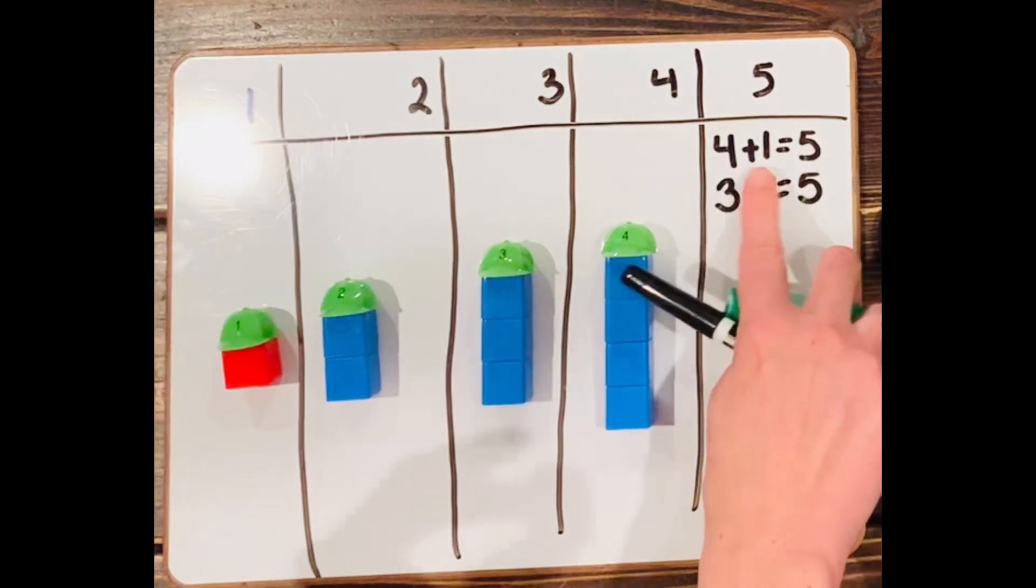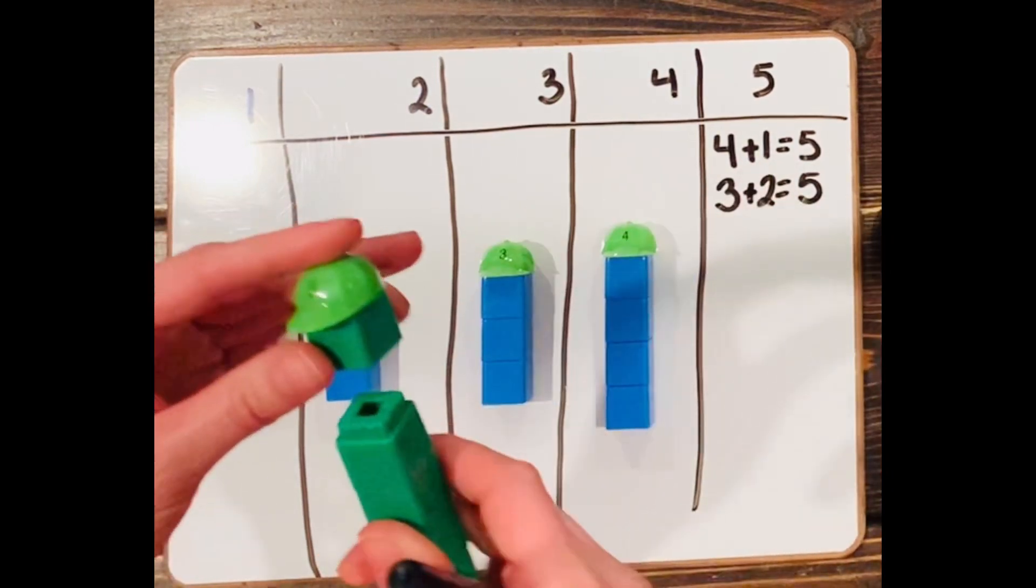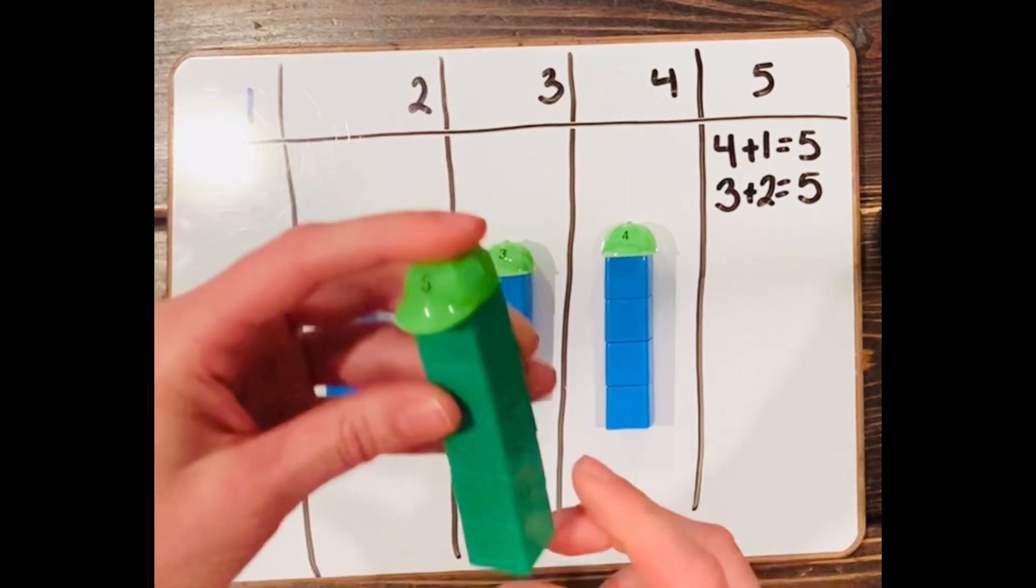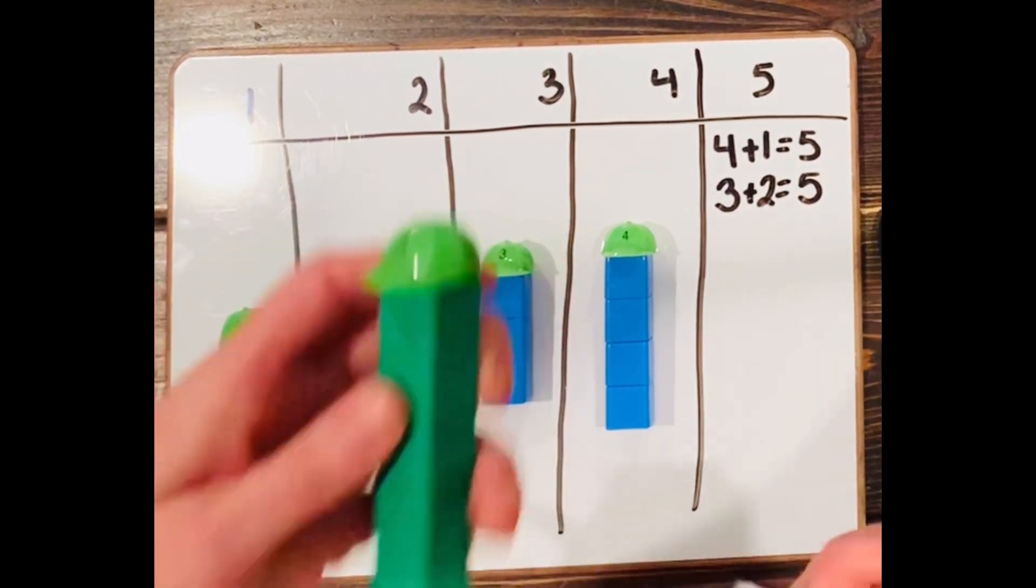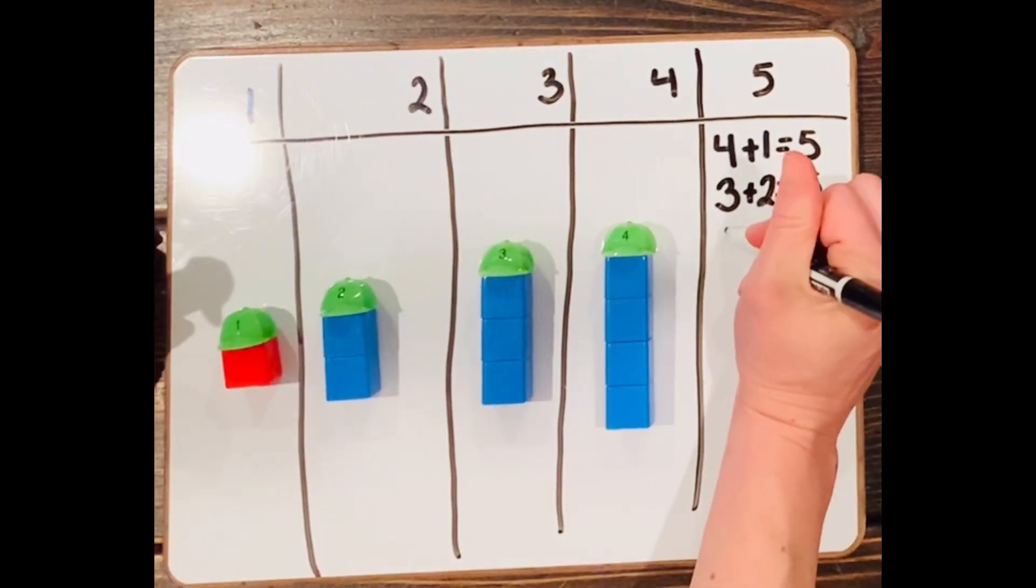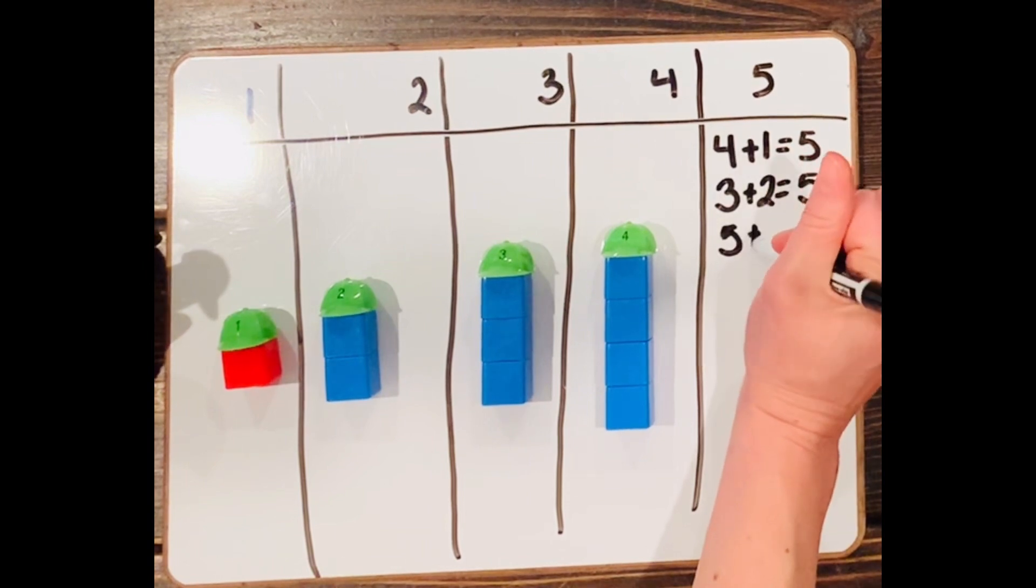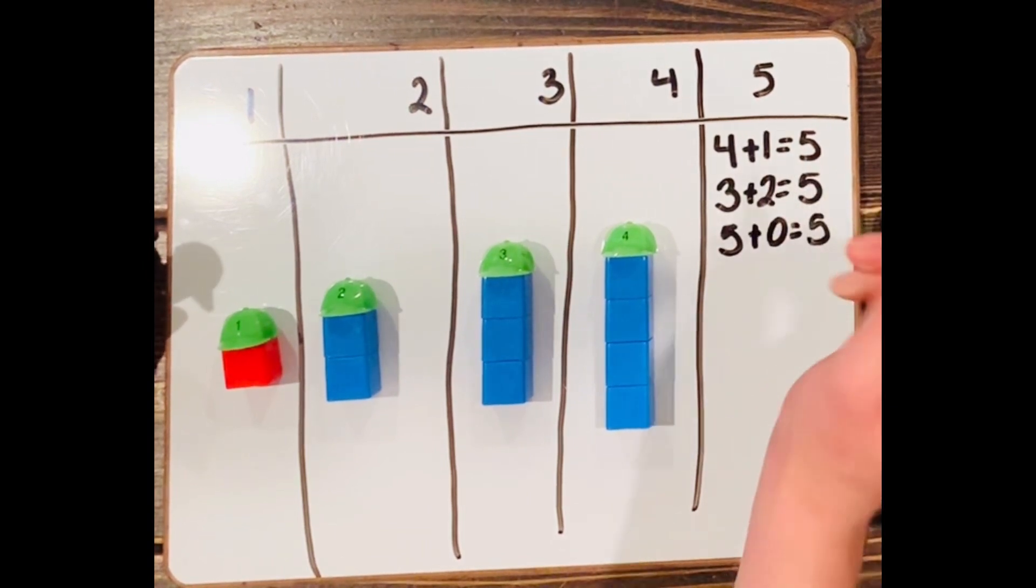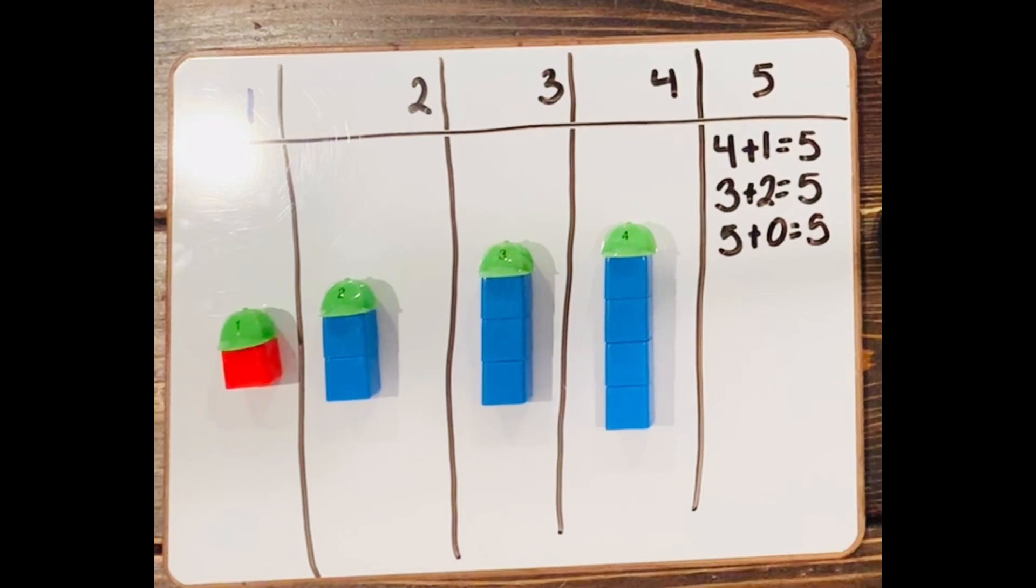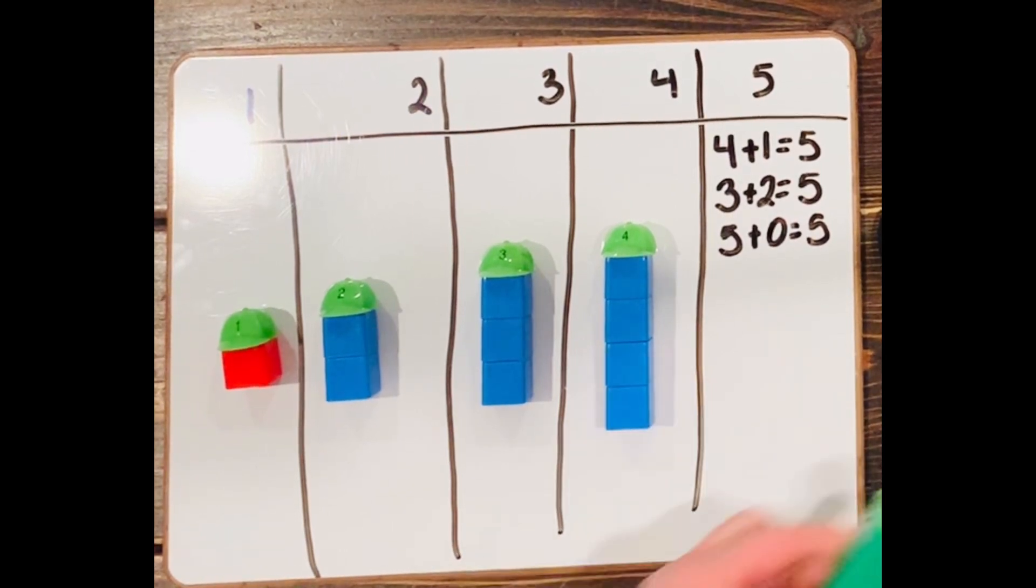And then that's the same one as that one, right? And then lastly, we can do zero the hero, right? Zero is nothing. So we can do five plus zero equals five. So we have three addition sentences for that one. Let's move on to number four.